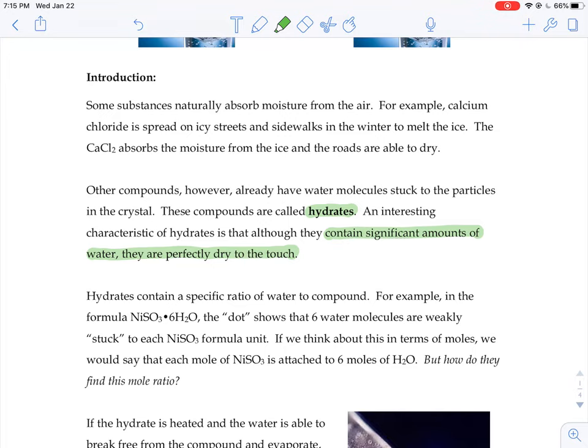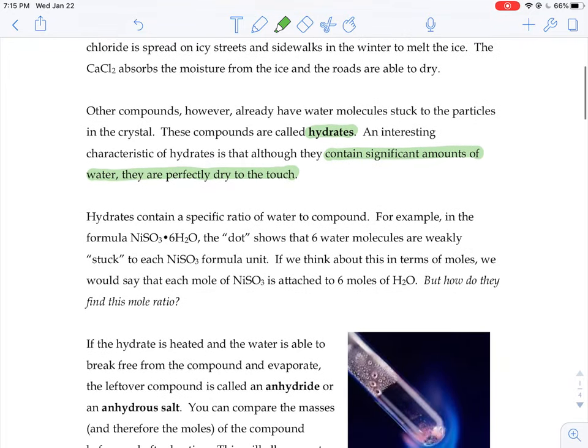One thing about hydrates is that they contain a very specific amount of water to compound. So if you saw this chemical formula, NiSO3·6H2O, the dot that you see there means that there are six water molecules attached to each nickel sulfite formula unit. But if we scale that up and put it in terms of moles rather than individual molecules, we could say that each mole of that nickel sulfite is attached to six moles worth of water.